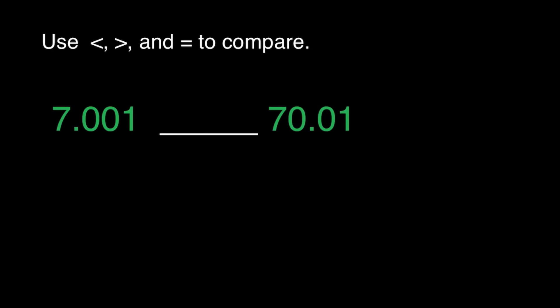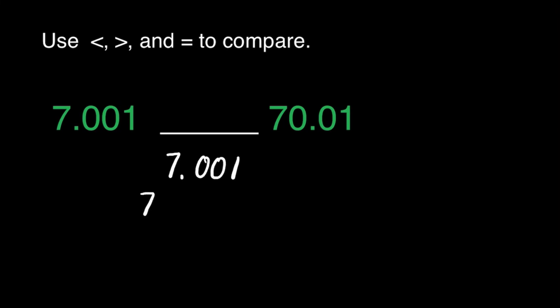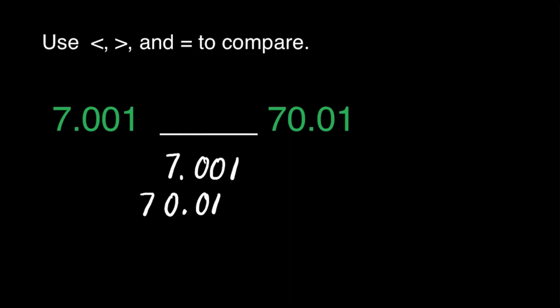Let us have the last one: 7 and 1 thousandths ___ 70 and 1 hundredths. Let's rewrite these decimals so that we can align their decimal points — 7 and 1 thousandths, and 70 and 1 hundredths. We have to take note that the value of the whole number part of the first decimal is 7, while the second is 70. So obviously, 70 is greater than 7, which means 7 is less than 70. Our answer for this question is less than: 7 and 1 thousandths is less than 70 and 1 hundredths.